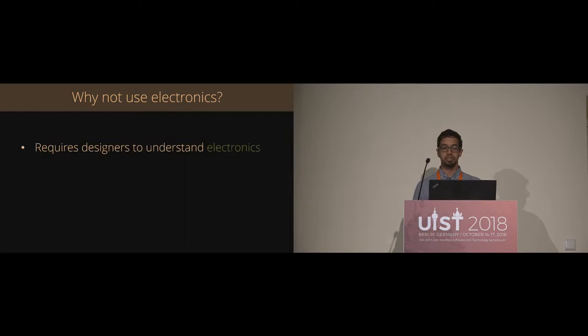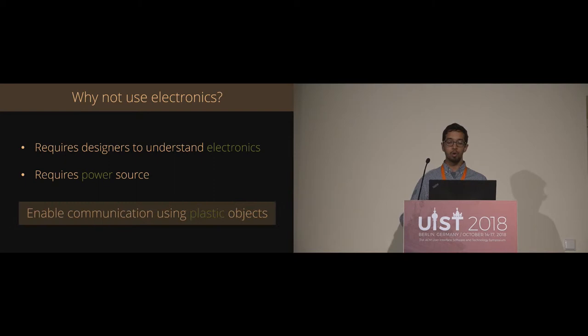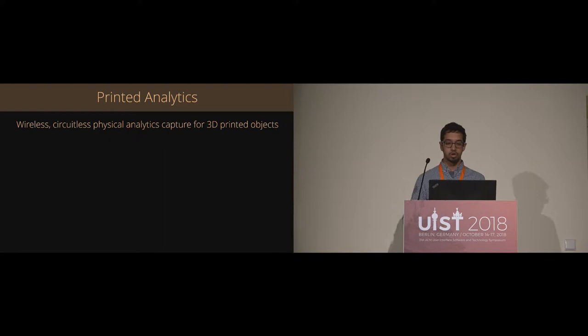But this introduces a few different problems. The first is that requires designers to have a pretty strong understanding of electronics. So on top of making the mechanical structure, they need to understand how to design the circuits and the software that these things need. But second of all, electronics always require some kind of power source. So that means we have to add a battery or a close by RFID reader to get our electronic system working. So in this work, we take a completely different approach and co-design our 3D printed objects and sensors together to create plastic objects that can communicate without any circuits.